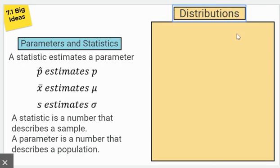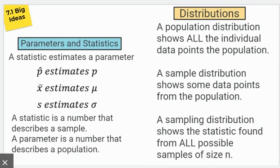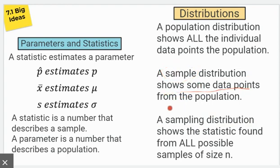In this lesson, we were introduced to different distributions. Let's take a look at the three different ones we have. A population distribution shows all of the individual data points for the entire population. You don't see population distributions very often, but it would show all the data points of the entire population. A sample distribution — notice that's different than a sampling distribution — shows some of the data points from a population. So if you had a population of people, took a sample of 20 people, measured their weight, and put those weights into a distribution, that would be called a sample distribution.